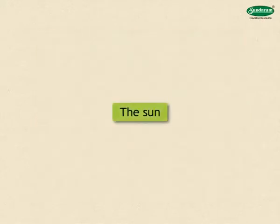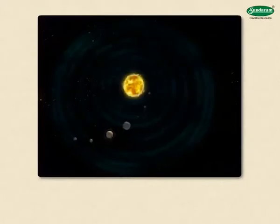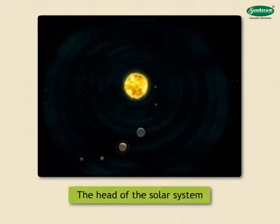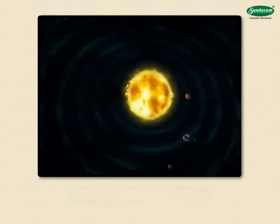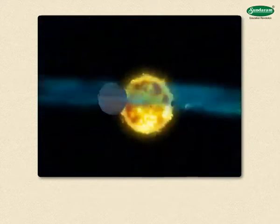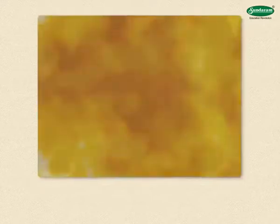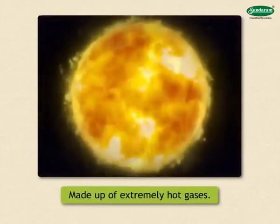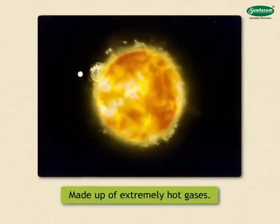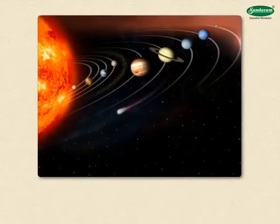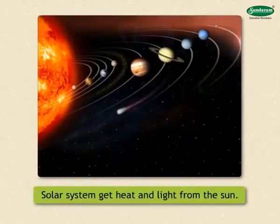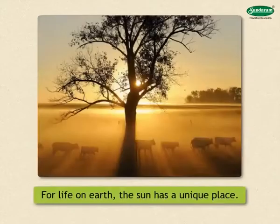The sun is the head of the solar system. It is a bright star, made up of extremely hot gases. All the members of the solar system get heat and light from the sun. For life on Earth, the sun has a unique place.